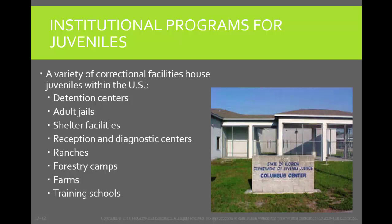Ranches, forestry camps, farms, and some training schools are, for the most part, all open facilities that allow for more movement. They are typically private facilities located in more remote areas than the detention facilities, and they don't have perimeter fencing. These are for lower risk offenders who are not likely to run.